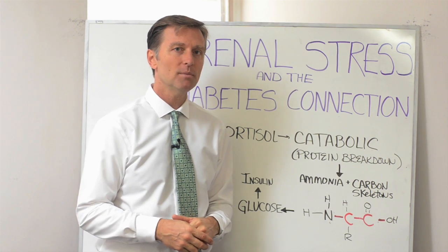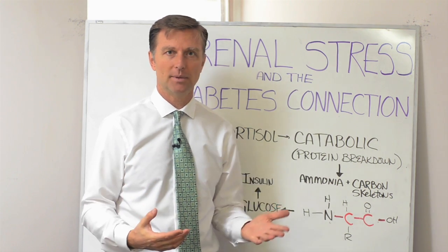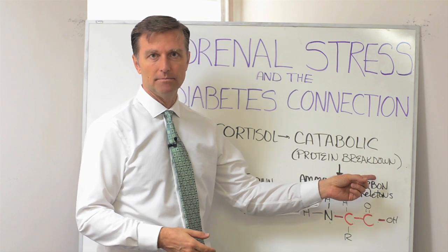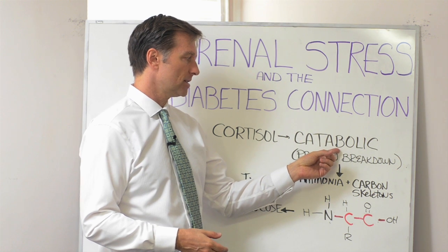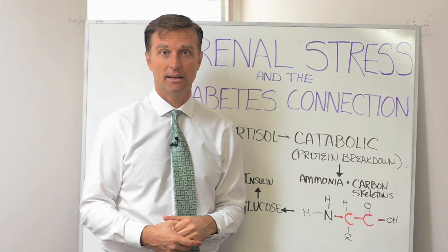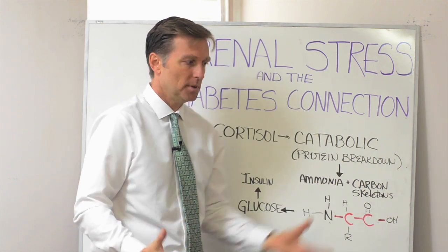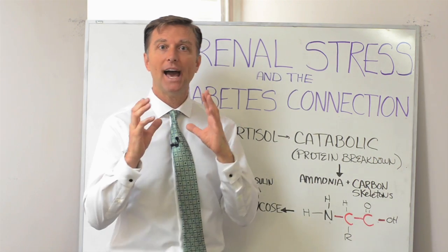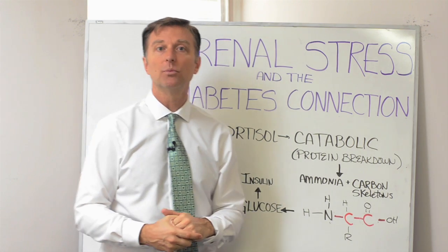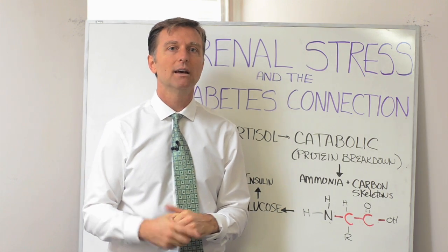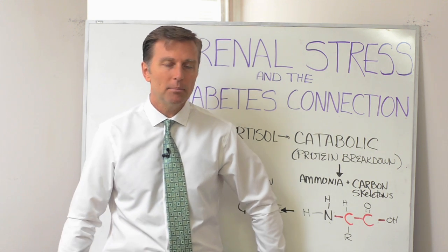Cortisol is a hormone that creates a catabolic effect. What does catabolic mean? Catabolic has to do with protein breakdown. The opposite is called anabolic — bodybuilders, for example, get injected with anabolic hormones to build up their muscle mass. Catabolic does the opposite: it breaks down your protein, making your muscles weak and flabby, going after the thigh muscles and the butt muscles.